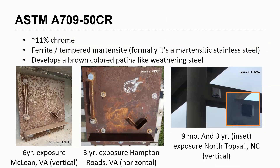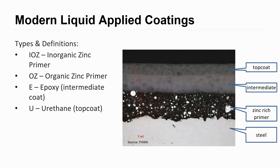ASTM A709 50CR is a low-grade stainless steel. Looking at the pictures, you'll notice it's not the stainless steel you think of for your appliances. The difference is the percent chromium in the chemical makeup — roughly speaking, you need at least 11% chromium to be considered a stainless steel, but it does provide much better corrosion protection than weathering steel. Your stainless steel appliances have upwards of about 30% chromium, so don't expect a shiny silver bridge when you think of stainless steel in bridge construction.